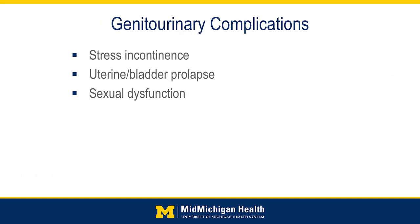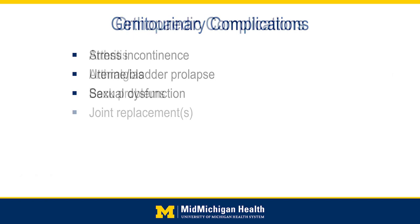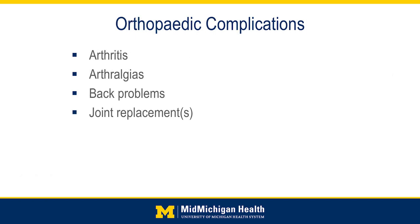Genitourinary complications include stress incontinence, which is more common in women because the urethra is shorter and women often undergo the stress of childbirth. If somebody coughs or sneezes they can have urine leakage. In some cases the pressure in the pelvis is so significant it can cause pelvic organ prolapse — affecting the uterus, bladder, or even the rectum. There are also higher rates of sexual dysfunction in patients with obesity.